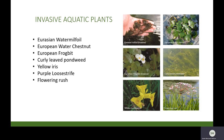Invasive aquatic plants are important contributors to excessive aquatic plant growth. Some of the most common ones you are likely to encounter locally are Eurasian water milfoil, European water chestnut, European frogbit, curly-leaf pondweed, yellow iris, purple loosestrife, and flowering rush.